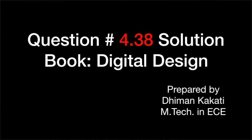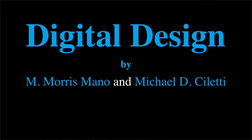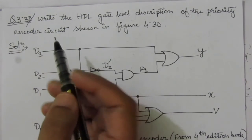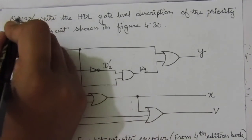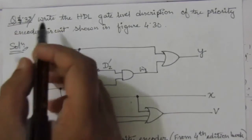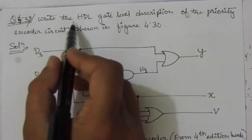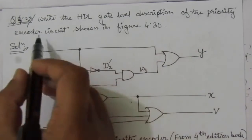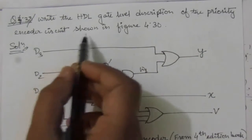Dear students, I welcome you all to this problem solution series in digital electronics. I am solving the problems from the book 'Digital Design' by Morris Mano and Michael Ciletti. In this video I am solving problem number 4.38 from chapter 4. The problem is: write the HDL gate level description of the priority encoder circuit shown in figure 4.30.